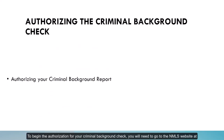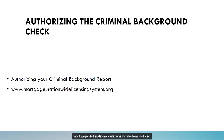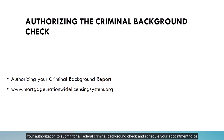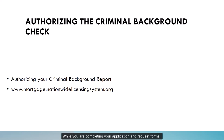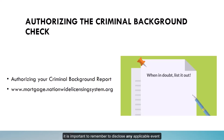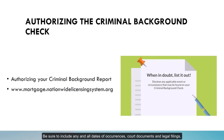To begin the authorization for your criminal background check, you will need to go to the NMLS website at mortgage.nationwidelicensingsystem.org. Your authorization to submit for a federal criminal background check and schedule your appointment to be fingerprinted will be completed entirely through your NMLS account. While you are completing your application and request forms, it is important to remember to disclose any applicable event or circumstance that may be found on your criminal background check. Be sure to include any and all dates of occurrences, court documents and legal filings, and complete explanations of the circumstances of any charges.